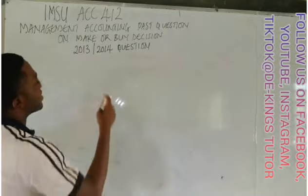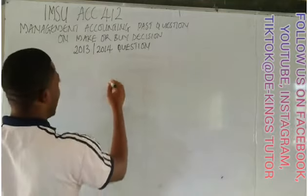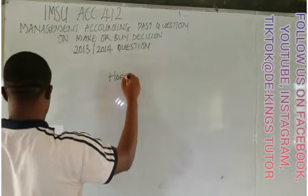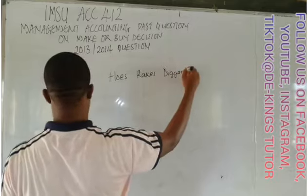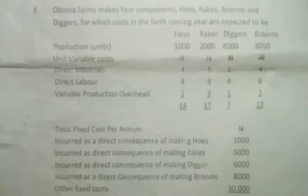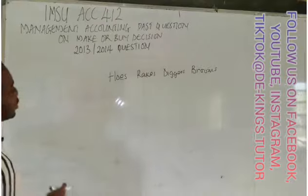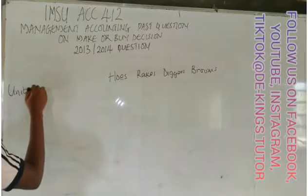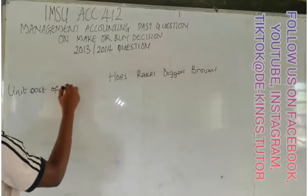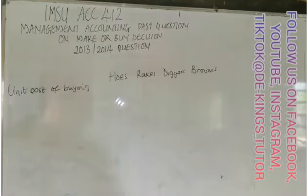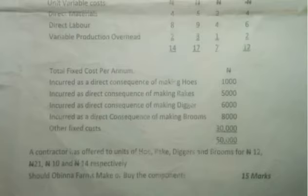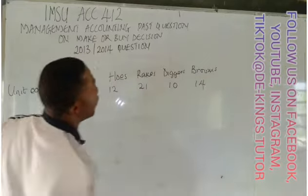Let's get the products: holes, rigs, diggers, and brooms. The first thing to do is get the unit cost of buying. How much did the contractor offer to sell to them? For holes it is 12, for rigs it is 21, for diggers it is 10, and for brooms it is 14.